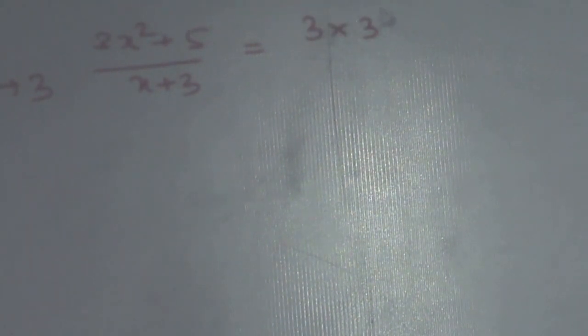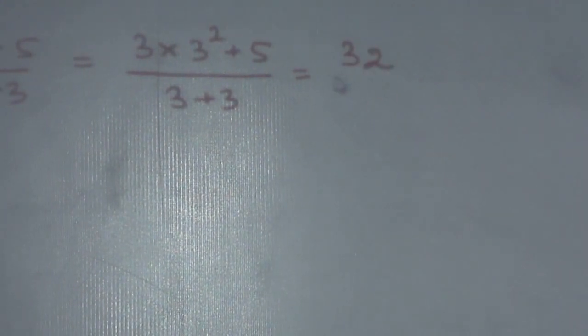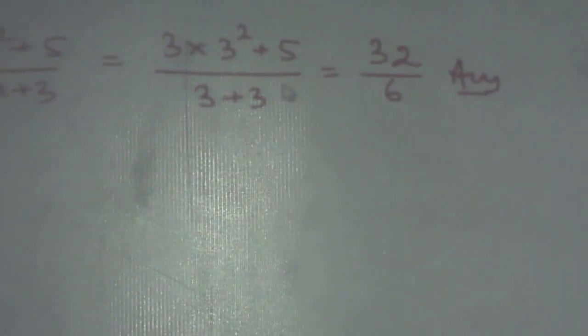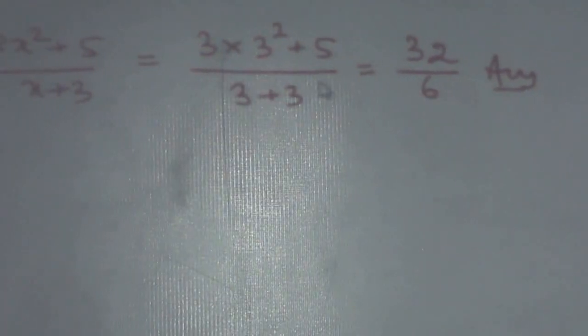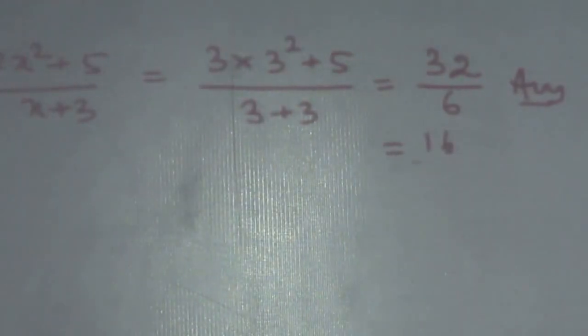Let us take another example. Limit x tends to 3 of (3x² + 5) / (x + 3). What is x tending to 3? We substitute x = 3: 3 squared is 9, 3 times 9 is 27, plus 5 is 32, divided by 3 plus 3 which is 6. So the limiting value is 32 divided by 6.